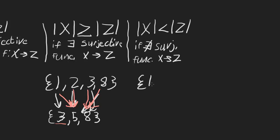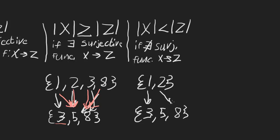For instance, if we have the set {1, 2} trying to map onto {3, 5, 8}, no matter how we draw the arrows there's no way to cover all elements in the target set — so there's no surjective function from {1, 2} to {3, 5, 8}, meaning the cardinality of the first set is smaller than the cardinality of the second.